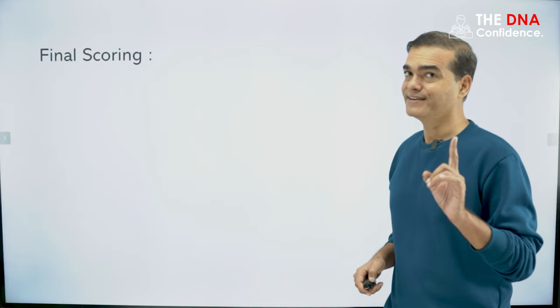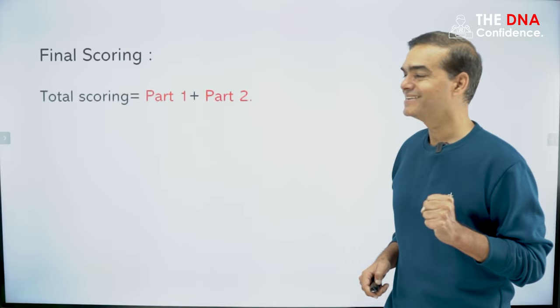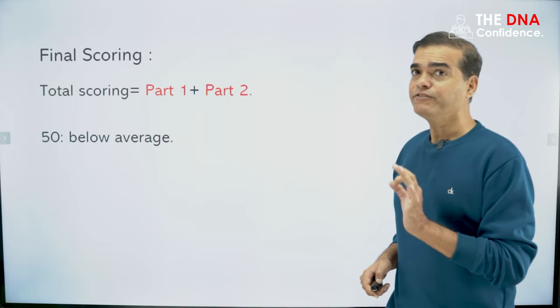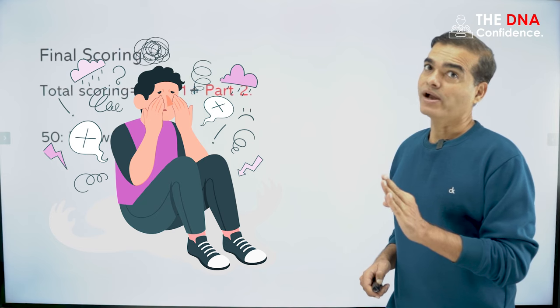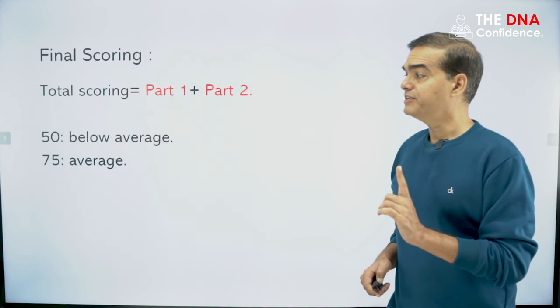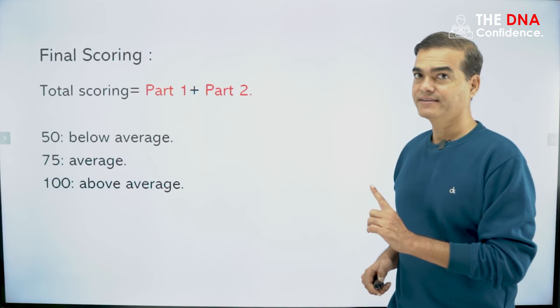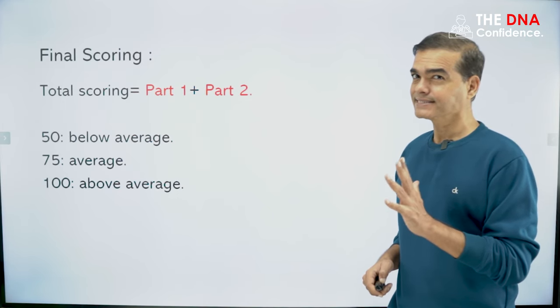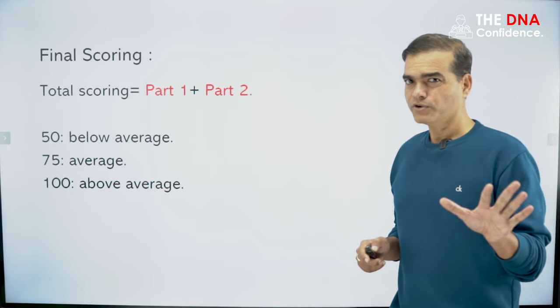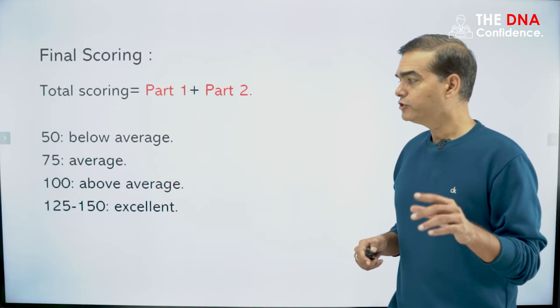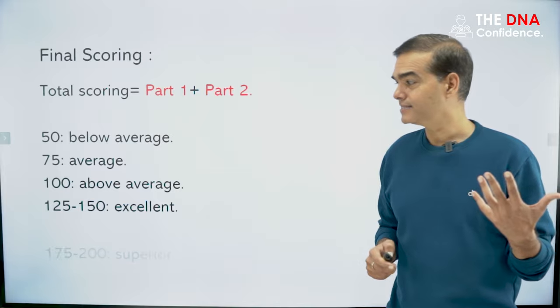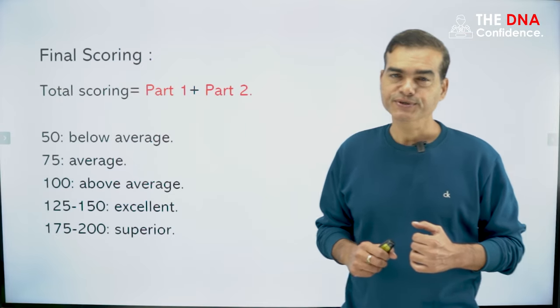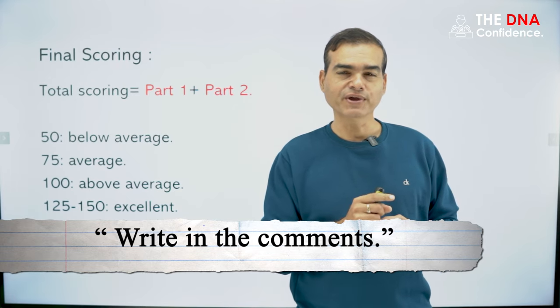Now the final calculation. Final scoring. Ready to see your score? Add part one and part two. And if your score is below 50, then you are below average in vocabulary. 75: average. 100: above average. 125 to 150: excellent. And last one is 175 to 200: superior vocabulary you have. So now write in your comments, what is your score? What is your vocabulary level?